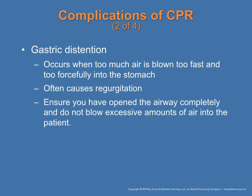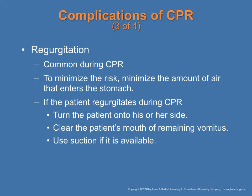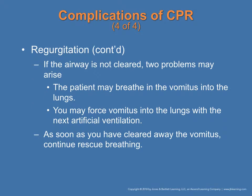Complications of CPR include broken ribs, but that should not stop you from continuing. If you hear cracking sounds, check and correct your hand position but continue CPR. Gastric distension occurs when too much air is blown too fast and too forcefully into the stomach — that's why controlling the rate of rescue breaths is very important. Regurgitation, meaning vomiting, can also occur due to increased air in the stomach. If suction is available, use it. Unfortunately, vomitus can sometimes enter the lungs and cause further damage. Once cleared, resume rescue breathing.